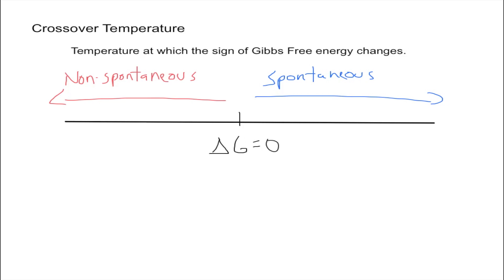In this video I'm going to talk about the crossover temperature. The crossover temperature is the temperature at which the sign of Gibbs free energy changes. In other words, it's the temperature at which a reaction goes from being spontaneous to non-spontaneous or vice versa, from non-spontaneous to spontaneous or from spontaneous to non-spontaneous.